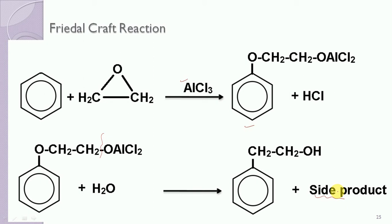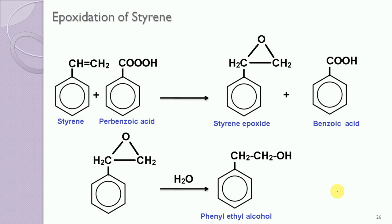However, this is not a clean route, and a wetter process which involves epoxidation of styrene is available. This method involves a reaction between styrene and perbenzoic acid. First of all, an intermediate compound called styrene epoxide will get formed along with benzoic acid. Then this styrene epoxide is hydrolyzed and finally converted into phenyl ethyl alcohol.